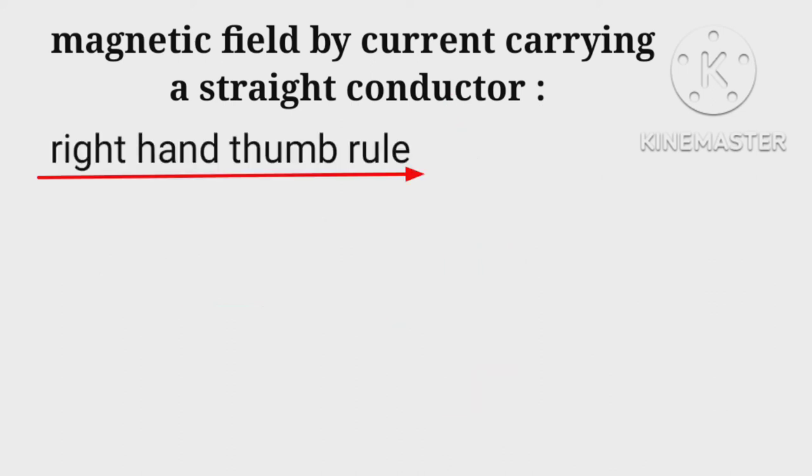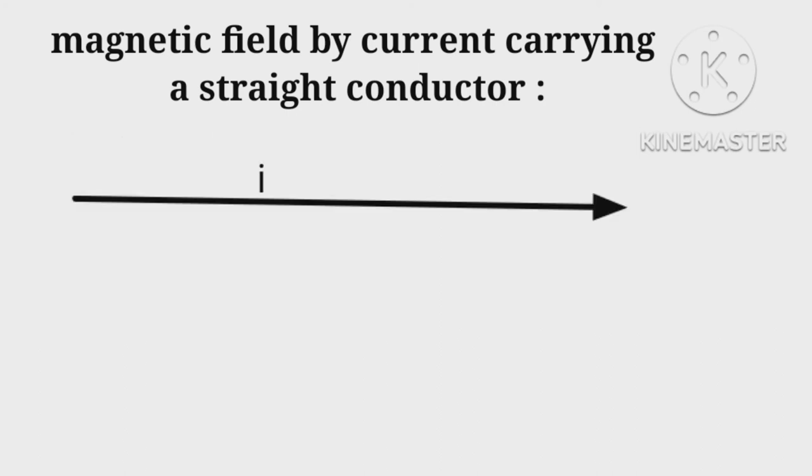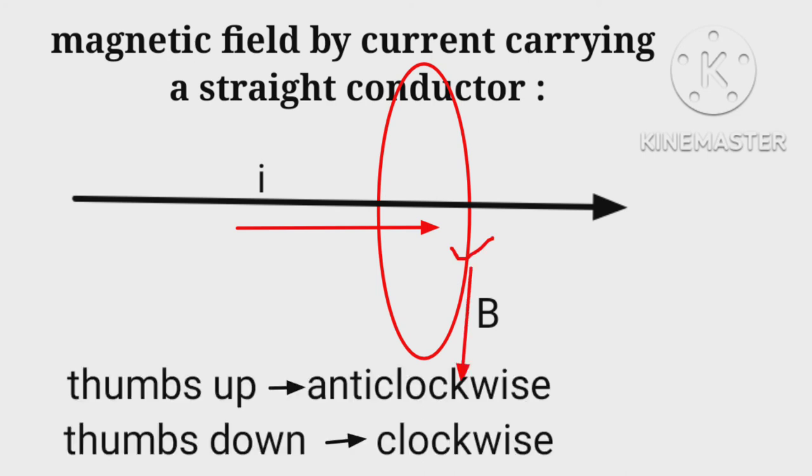The direction is found by right-hand thumb rule that states: pick the wire with your right hand palm keeping thumb raised up in the direction of current, then the curling of fingers show the direction of magnetic field produced.